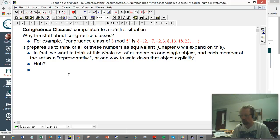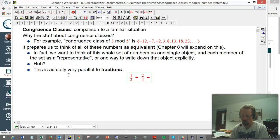I want to compare that to a situation that you're familiar with. This is actually very parallel to fractions. So, fractions, we know that, for example, the fraction 1 half is equal to the same thing as 2 fourths, is equal to 3 sixths, is equal to, let's say, minus 7 over minus 14, is equal to—there's an infinite number of ways to write that fraction.